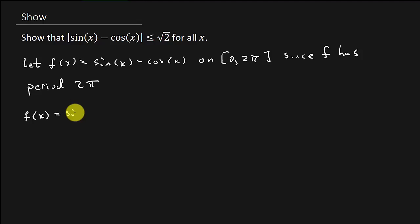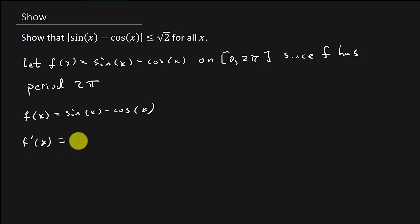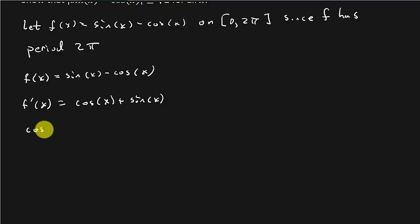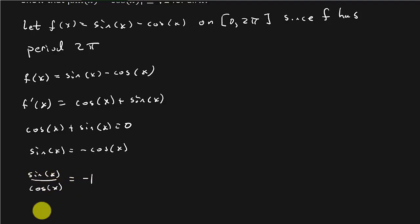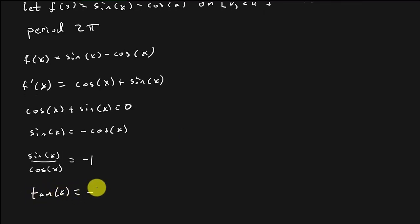Let's write f of x down again. If we take the derivative — remember, to find critical numbers, take the derivative and set it equal to 0 — that's going to be cosine x. The derivative of cosine is negative sine, so the two negatives make a positive. We set this equal to 0, which gives us sine x equals negative cosine x. Dividing both sides by cosine, we get sine x over cosine x equals negative 1, which means tangent x equals negative 1.